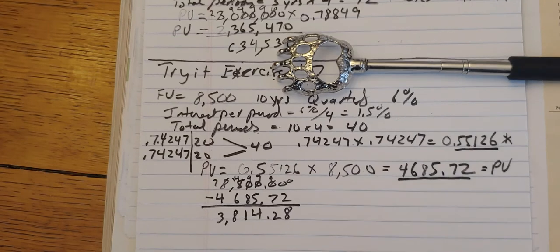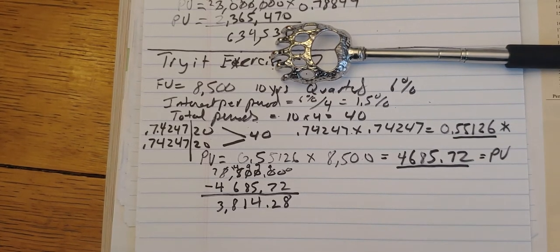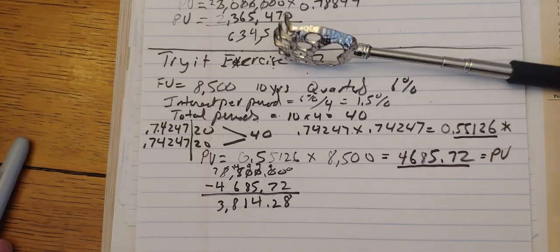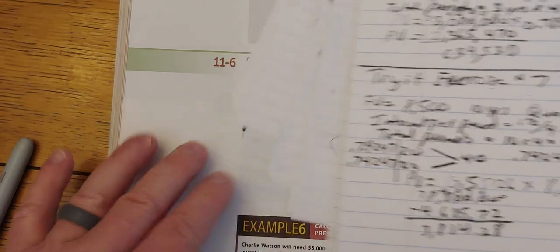All right. So you can see the interest rate, how much interest we would earn. All right. So that's how you figure out if the periods extend beyond your table, how to figure that out.